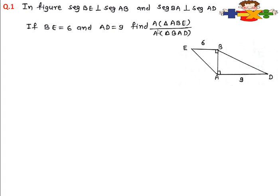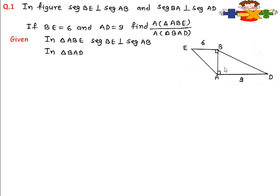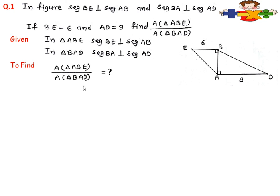We have to find the ratio of the area of triangle ABE and triangle BAD — that is, the ratio of the areas of both triangles. What is given: segment BE is perpendicular on AB, and in triangle BAD, segment BA is perpendicular on AD. We have to find the area of triangle ABE upon the area of triangle BAD. Now, solution.